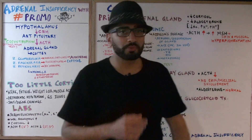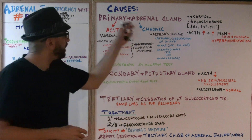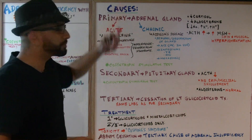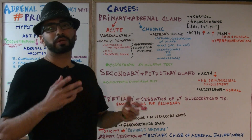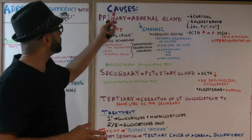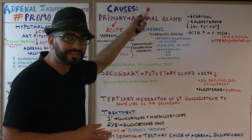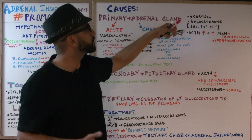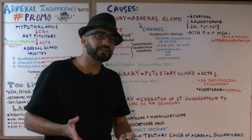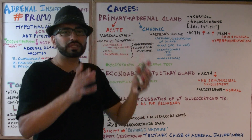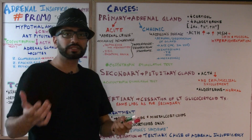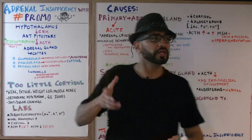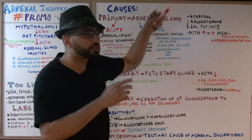Let's talk about the causes in more detail. Primary means the problem is at the level of the adrenal gland — cortisol levels are decreased. If the adrenal gland's cortex is not functioning, that means it's not producing aldosterone either. So this patient's aldosterone levels will be low as well.